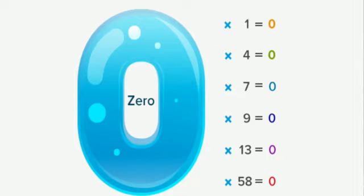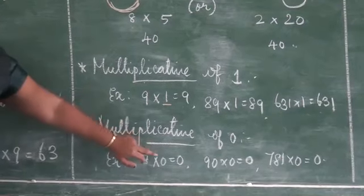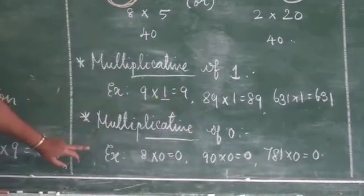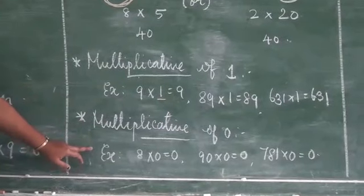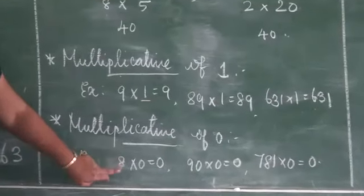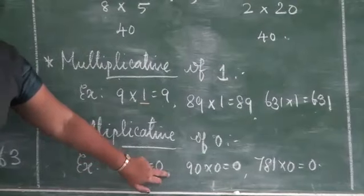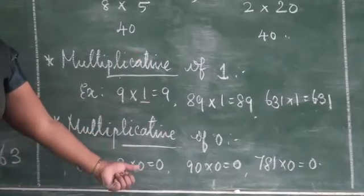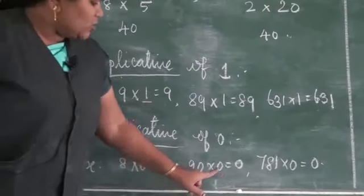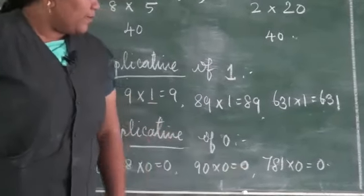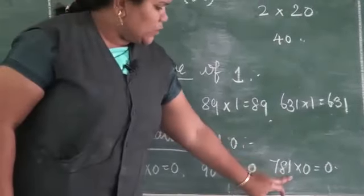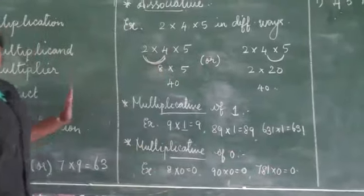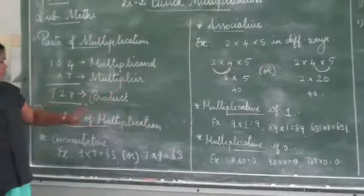Finally, the multiplicative property of zero: a number multiplied by zero gives a product of zero. For example, 8 × 0 = 0, and 90 × 0 = 0. Even 781 × 0 = 0. A number multiplied by zero is always zero.